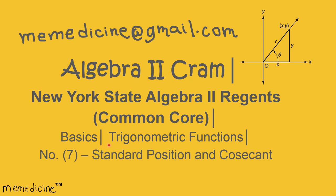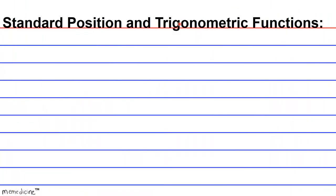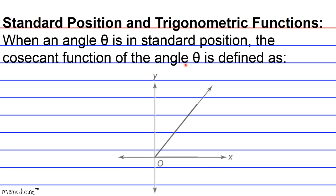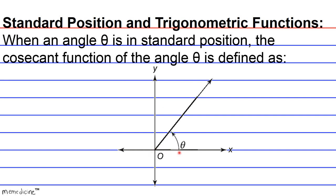So let's delve into the concept of standard position and the cosecant function. When an angle theta is in standard position, the cosecant function is defined as... I'll give you a moment to think — definitely press pause if you need a moment. Hopefully by now you were able to arrive at an answer. And if you watched the first cram session in this particular series, you would have known the concept of standard position because we laid it out in concept one.